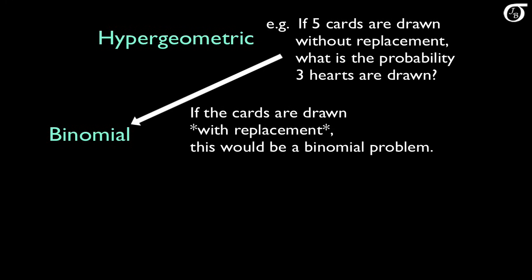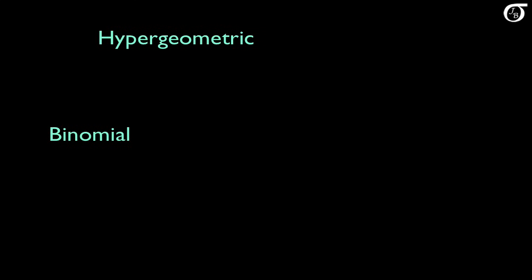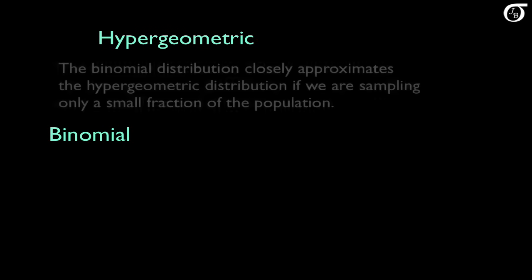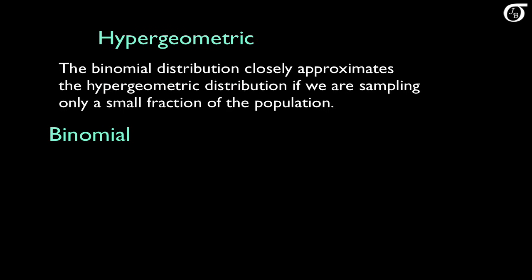If we are sampling only a small fraction of objects without replacement from a large population, then the trials are still not independent, but that dependency has only a small effect, and the binomial distribution closely approximates the hypergeometric distribution. So there are times when a problem is hypergeometric in nature, but we use the binomial distribution as an approximation, which can make our life a little bit easier sometimes.